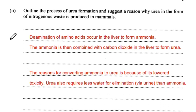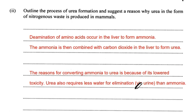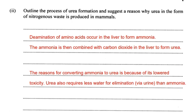The ammonia is then combined with carbon dioxide in the liver to form urea. We must excrete this urea because it can be toxic if left for a long time. The reasons for converting ammonia to urea are that urea has a lower toxicity compared to ammonia, which is highly toxic, and urea requires less water for elimination via urine than ammonia does.